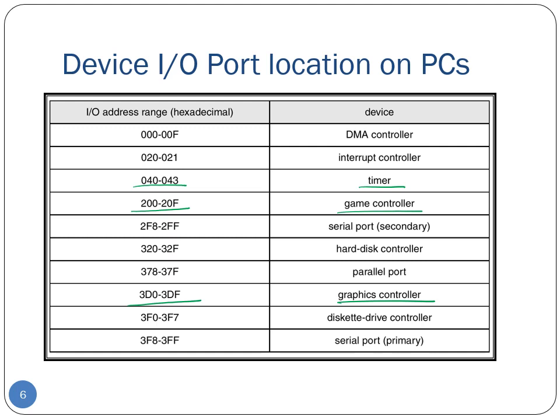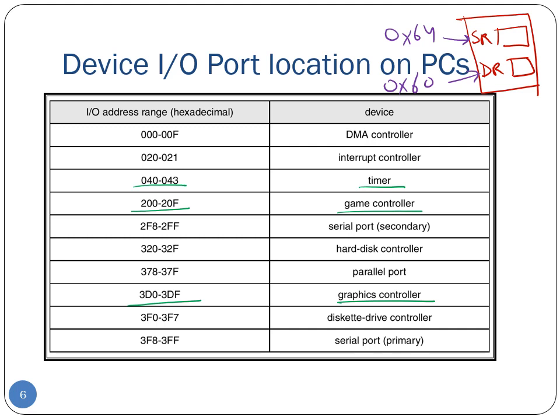One possible way for the CPU to communicate with I/O devices is by using special I/O instructions that specify the amount of data to transfer to a certain I/O port address. For example, assume an I/O device has a status register at address hexadecimal 64 and a data register at hexadecimal 60. To read the current content of the status register, we might use an instruction like 'inb r1, 0x64' — reading one byte into register r1 from address 64. To write into the data register, we use an instruction like 'outb r1, 0x60'.